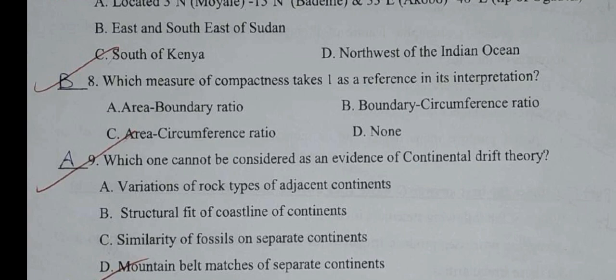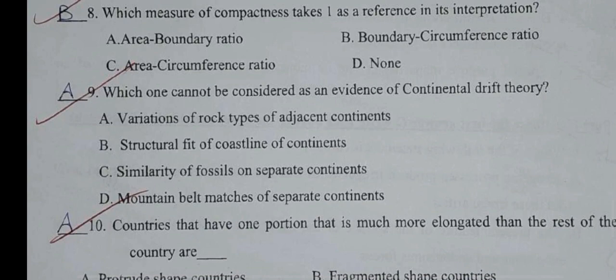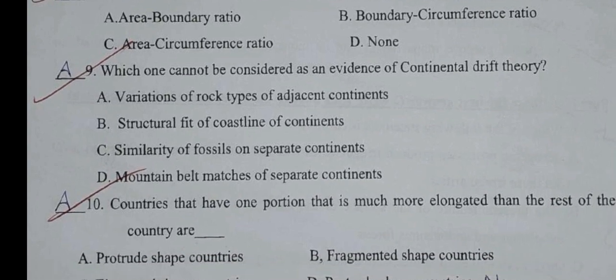Question number eight: Which measure of compactness takes one as a reference in its interpretation? A: Area-boundary ratio. B: Boundary-circumference ratio. C: Area-circumference ratio. D: None. The correct answer is B: Boundary-circumference ratio.